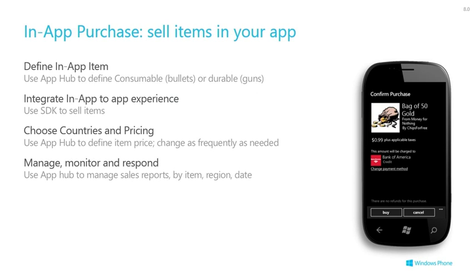The process to define an in-app item is: you use dev.windowsphone.com to define the in-app items, then use the SDK to integrate that into the experience — the offering to your users. You offer items in whatever way is appropriate for your application, that are in-app purchasable items. You need to check for items that users may have purchased for durables, to determine whether they're allowed access to a particular feature. You also choose countries and pricing and manage, monitor, and respond. There's nothing more annoying for the user if they feel they've purchased something and your app is telling them they haven't.